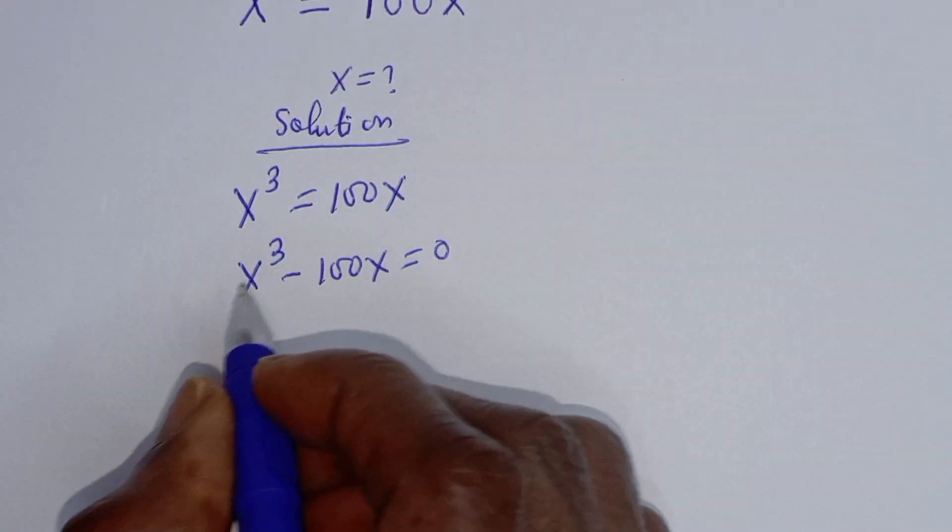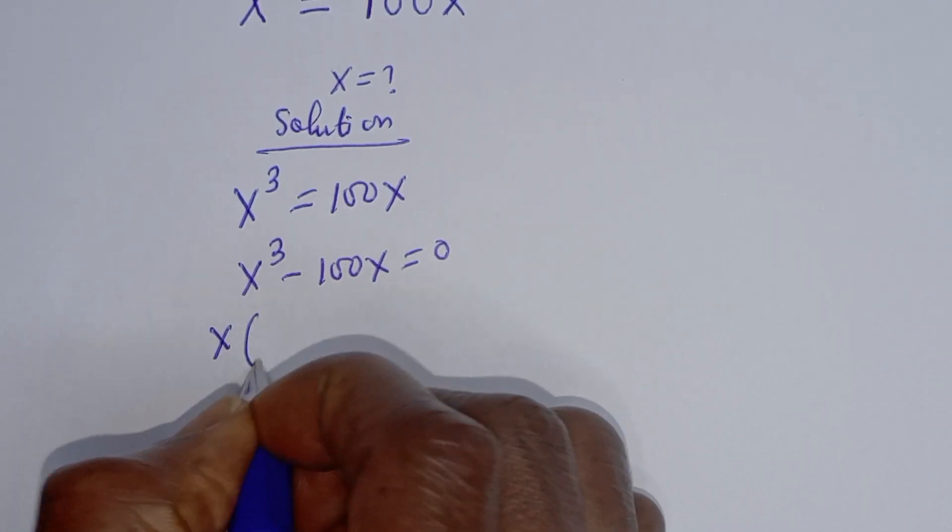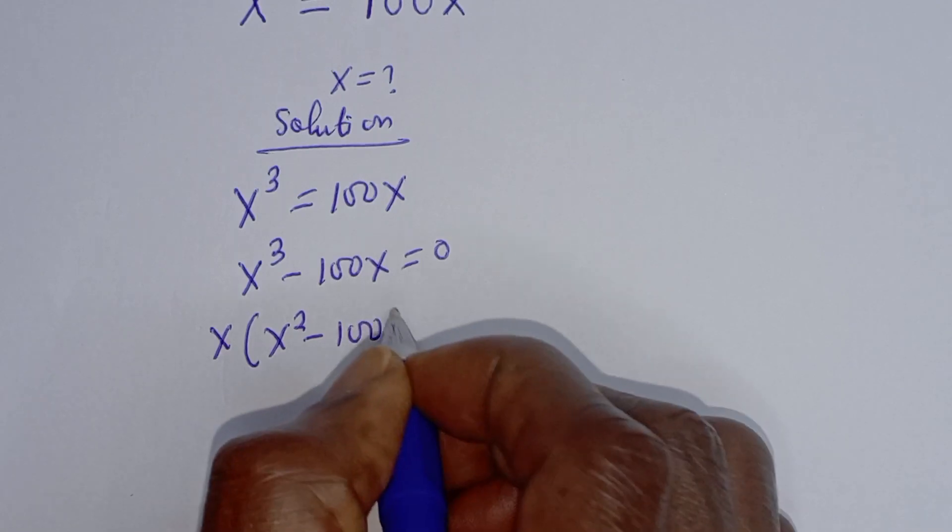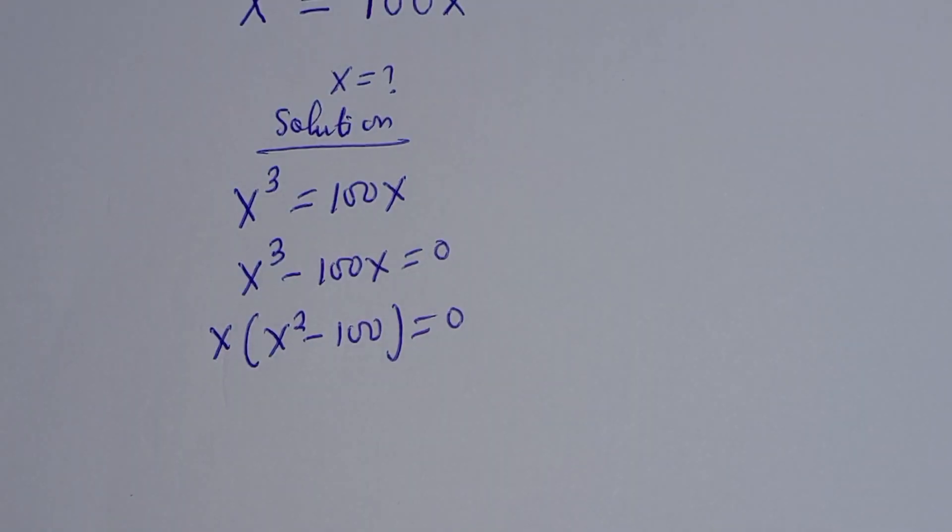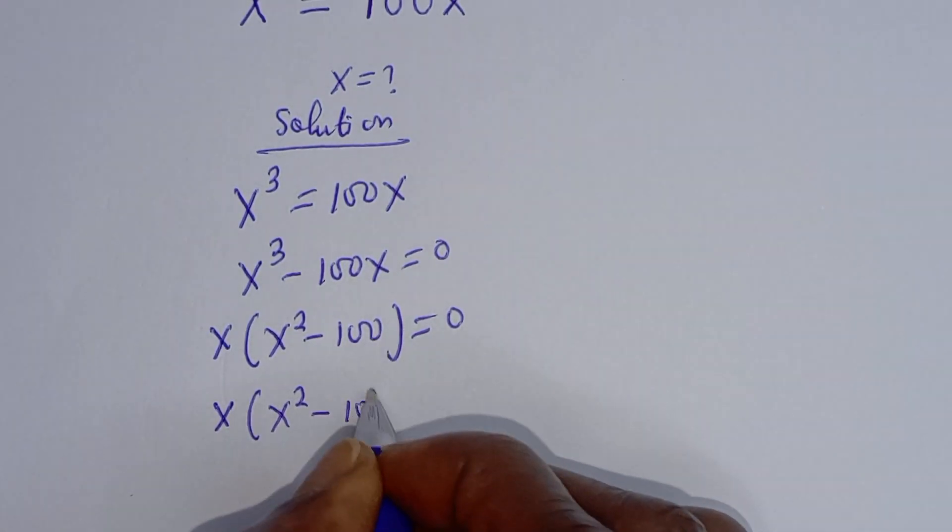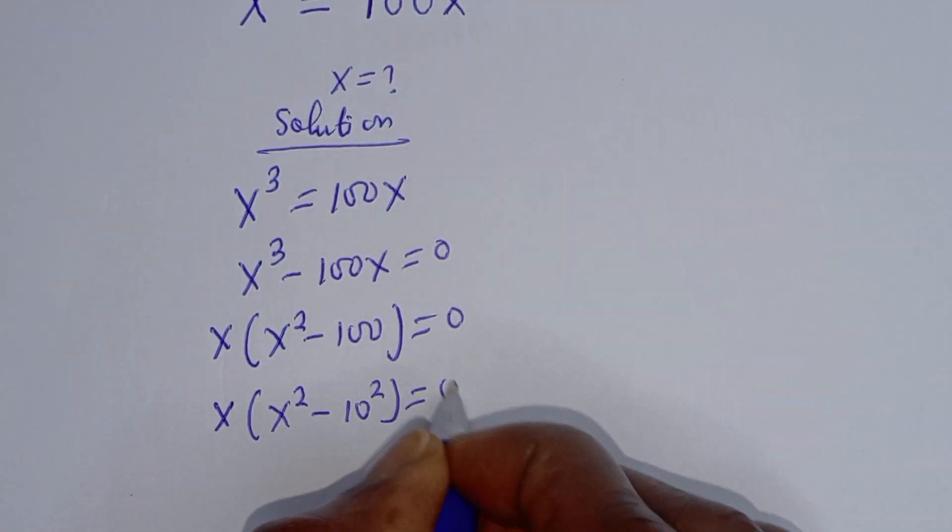Then x is common. Here is x bracket x square minus 100 is equal to 0. This is x bracket x square minus 100 can be written as 10 square is equal to 0.